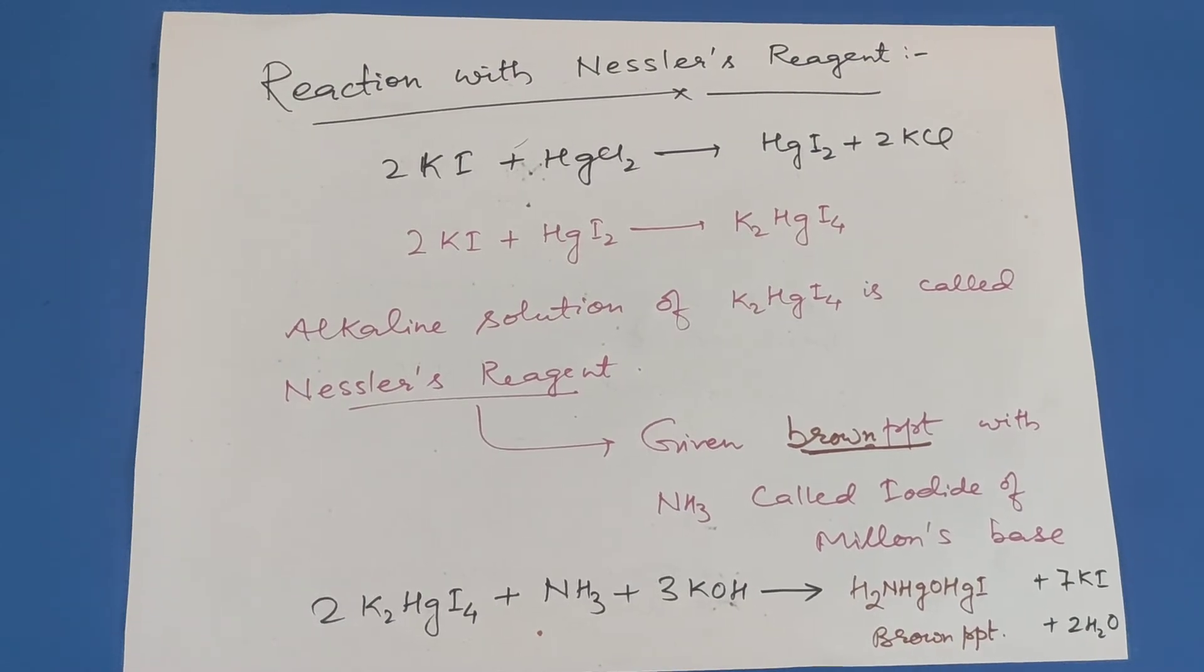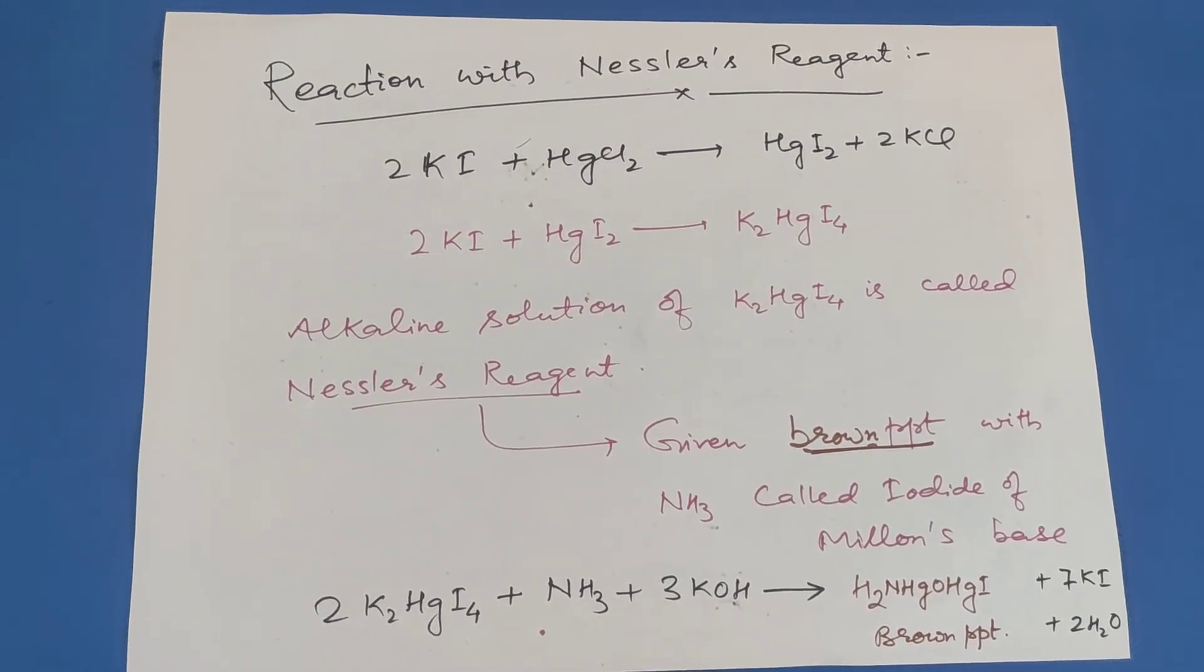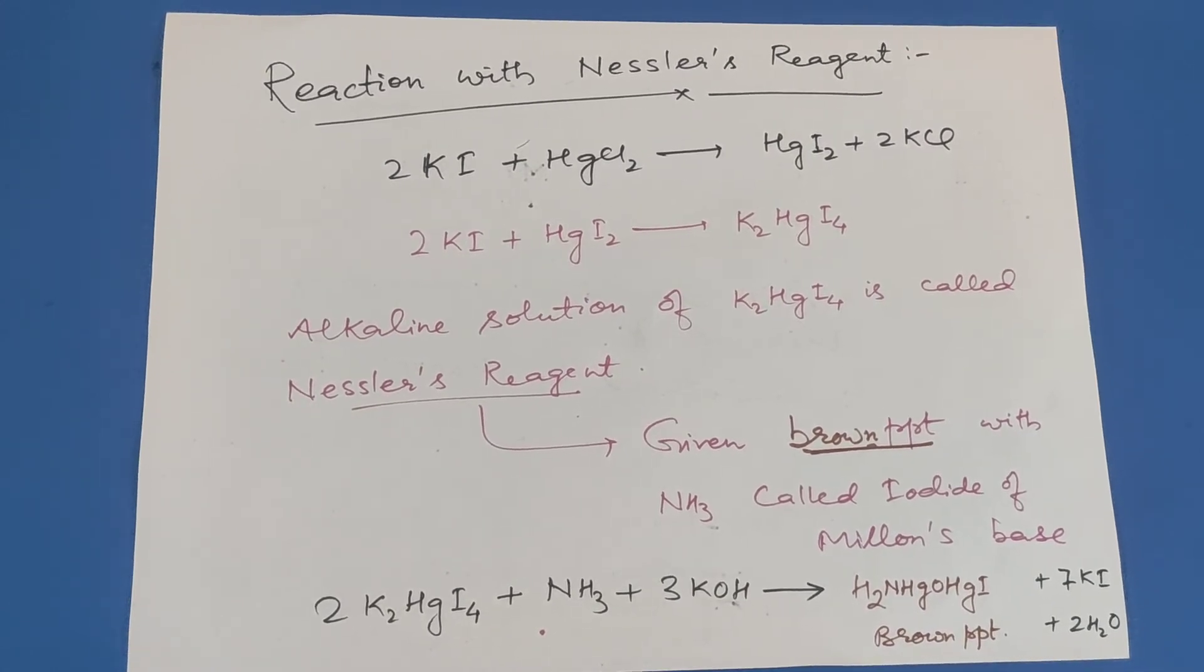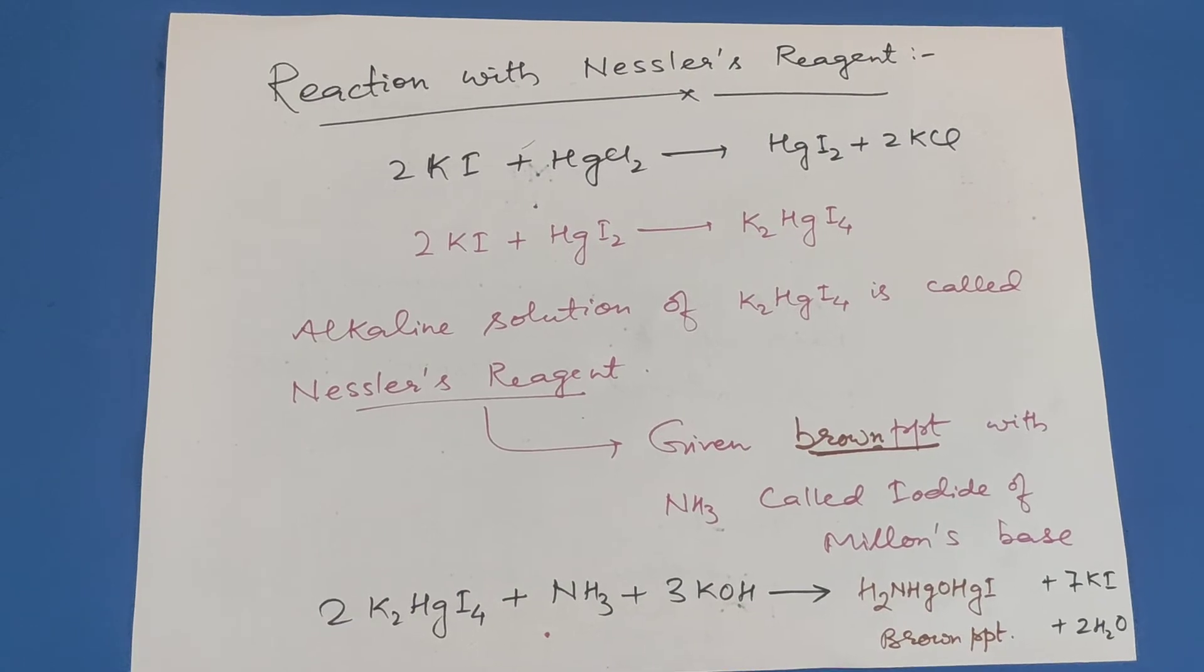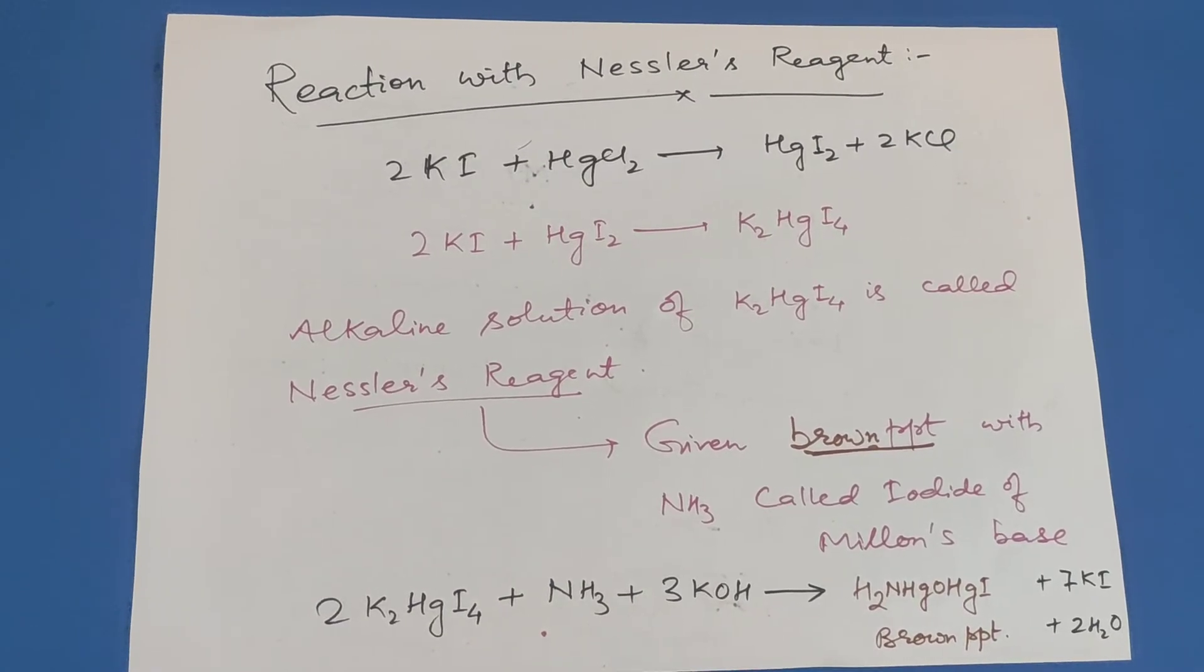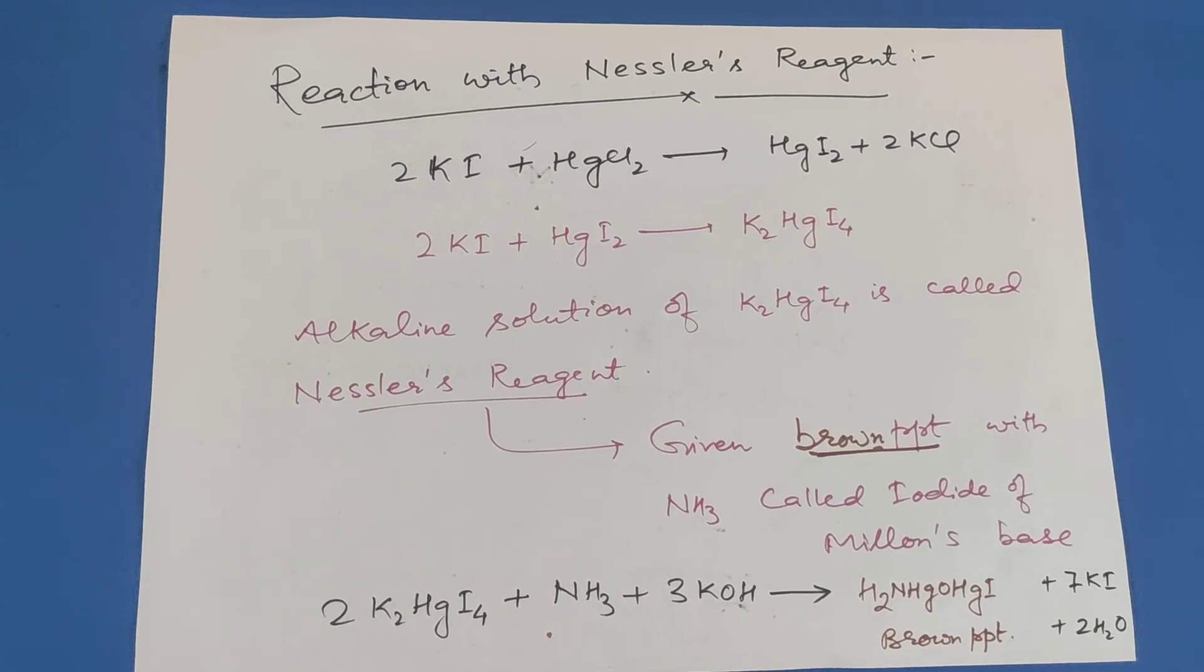Reactions with Nessler's reagent: Alkaline solution of K2HgI4 is called Nessler's reagent. K2HgI4 is also called potassium tetraiodomercurate II.